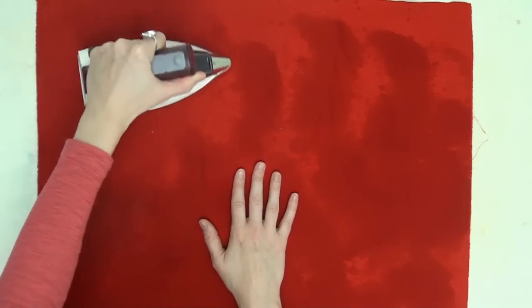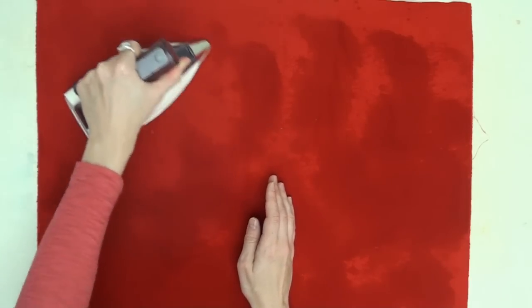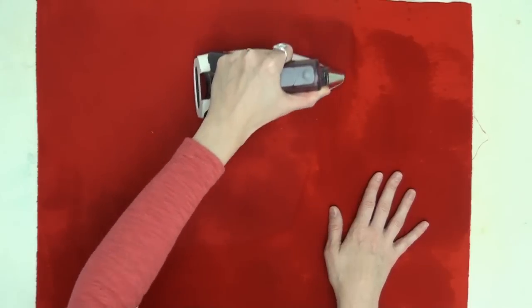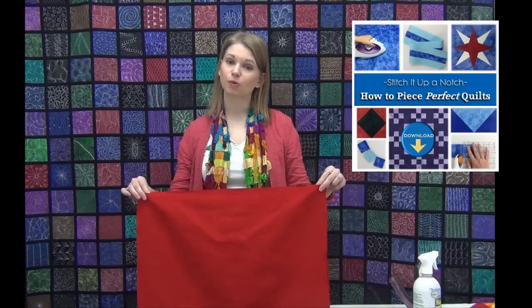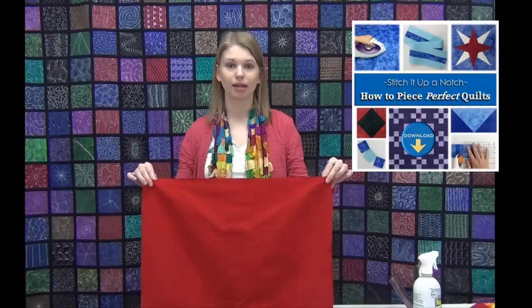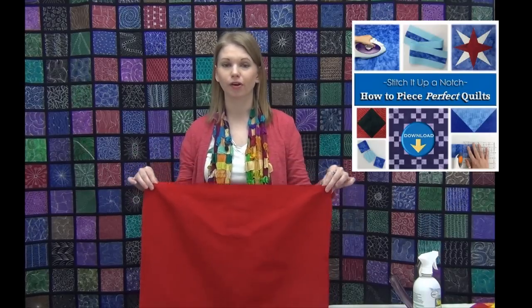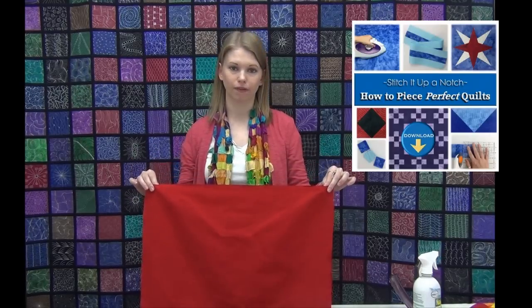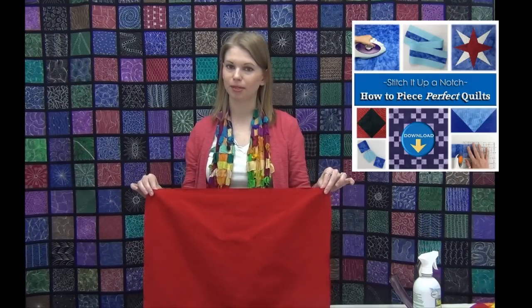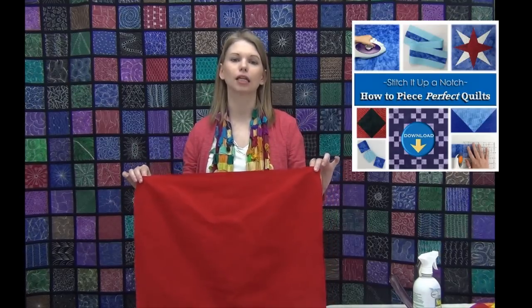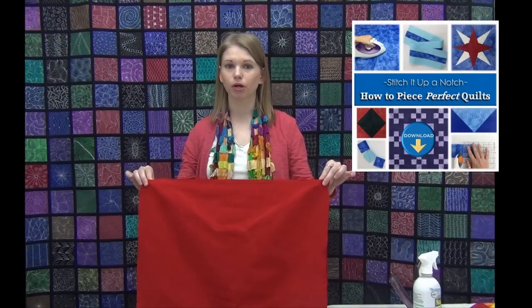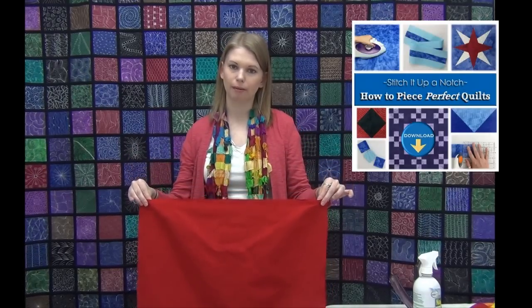Because it's going to make it so much easier to cut your strips and squares accurately. So the next step is to square a fabric so it's ready to cut and we're going to be able to cut nice straight strips that are lined up with the grain line of the fabric. And if you don't know what that means, definitely check out my book, How to Piece Perfect Quilts. I really go into a lot of detail about grain line, how fabric works, why it's so important to take this extra step.